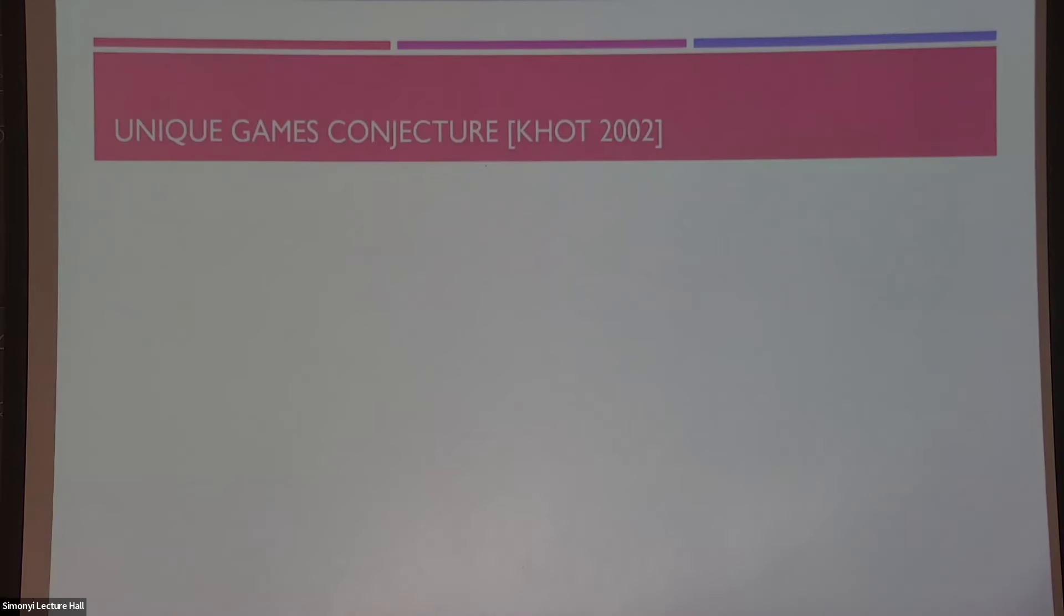So, the unique games conjecture was the conjecture by Khot in 2002 and it says this: for every epsilon greater than zero, the following problem is NP-hard. The input to this problem is just a unique games instance as before and let's denote the number of equations in it by k.